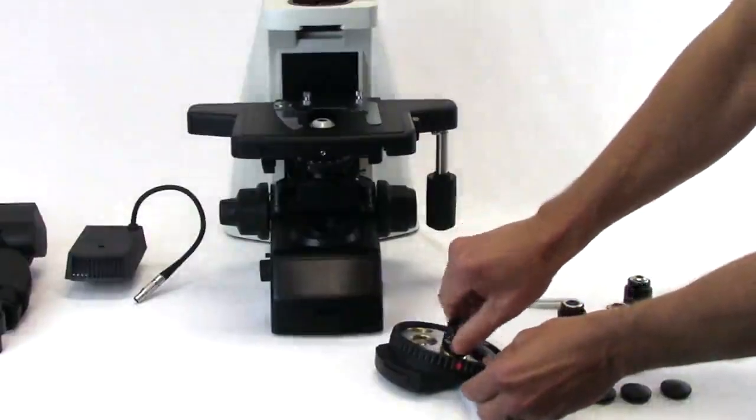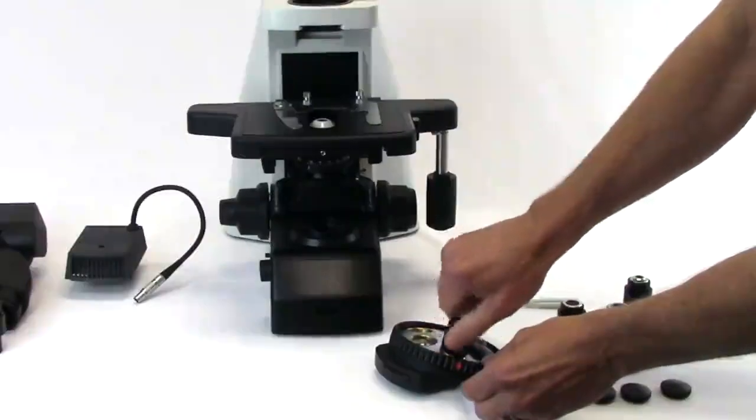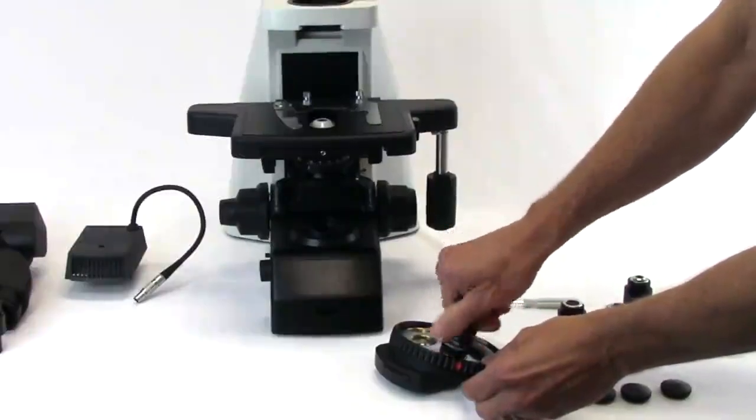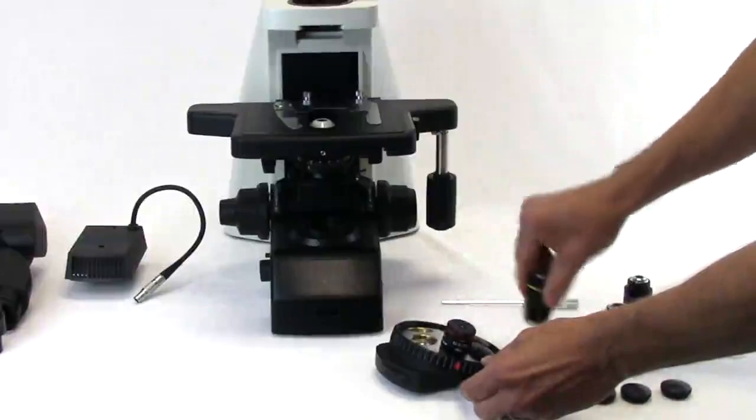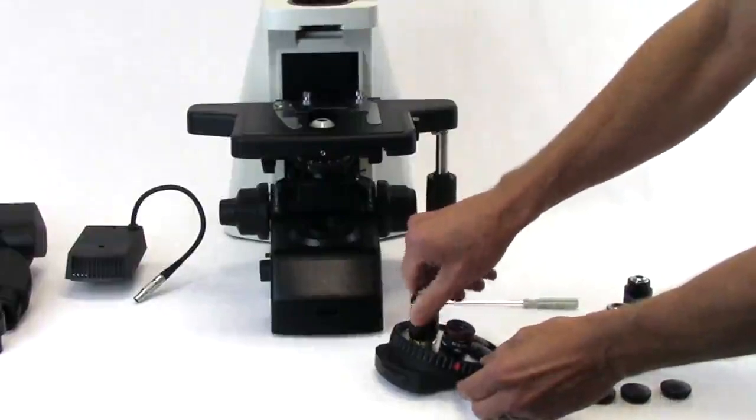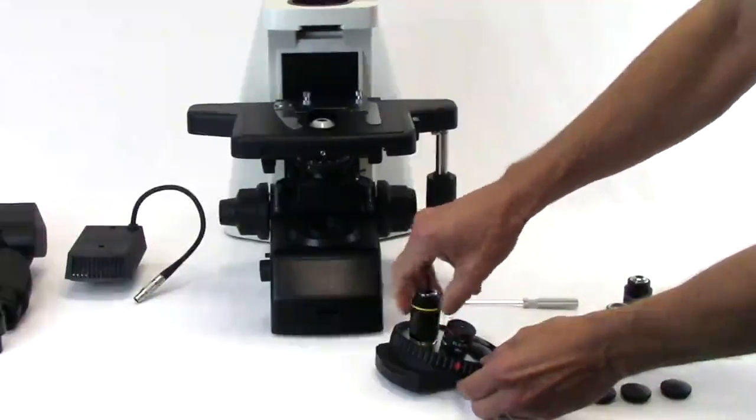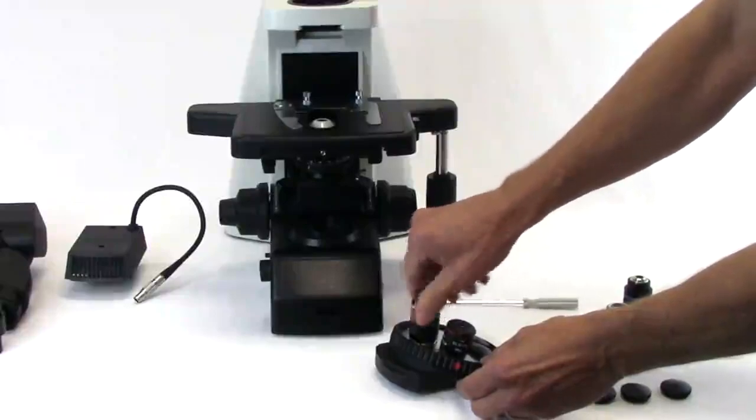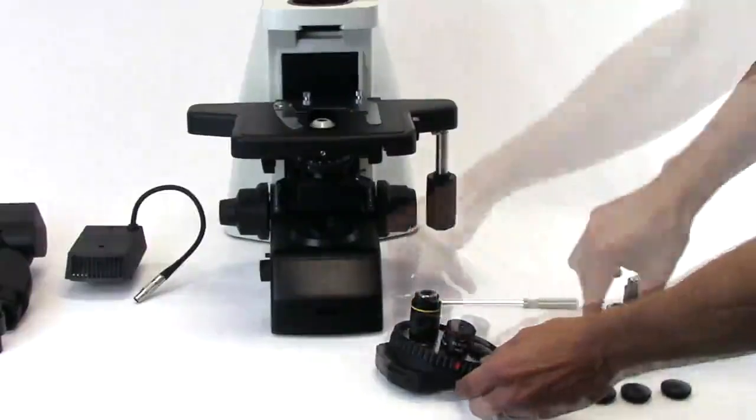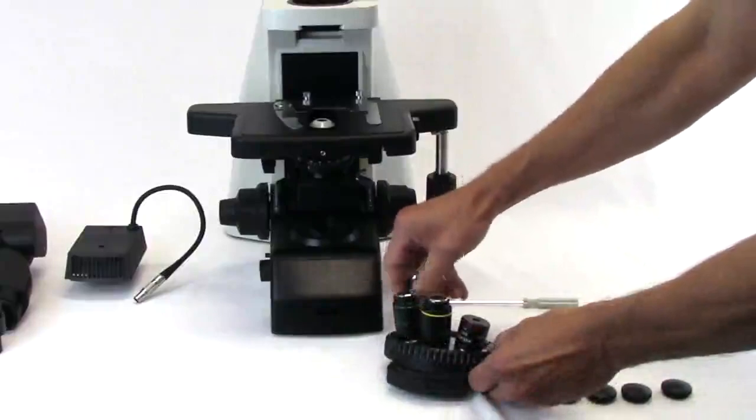Install the objectives into the nose piece from the lowest magnification to the highest in a clockwise direction, beginning with the first empty objective receptacle as indicated by the red dot. Gently screw in each objective in a clockwise direction into the threads of the nose piece receptacle.